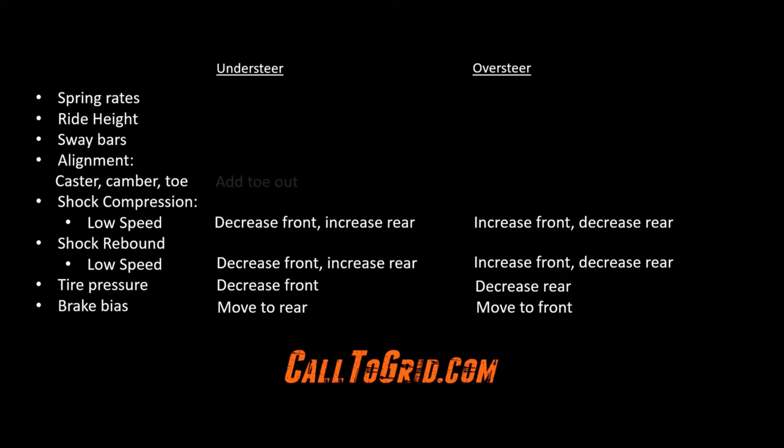For alignment, for understeer consider running more toe out, which should help turn in. To correct for oversteer after the initial throttle application, consider running less negative rear camber.